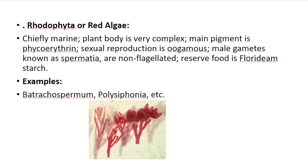Rhodophyta (red algae): Chiefly marine. Thallus body is very complex. Main pigment is phycoerythrin. Sexual reproduction is oogamous type. Male gamete is spermatia — non-flagellated. Reserve food is floridian starch. Examples: Nemalion, Polysiphonia.